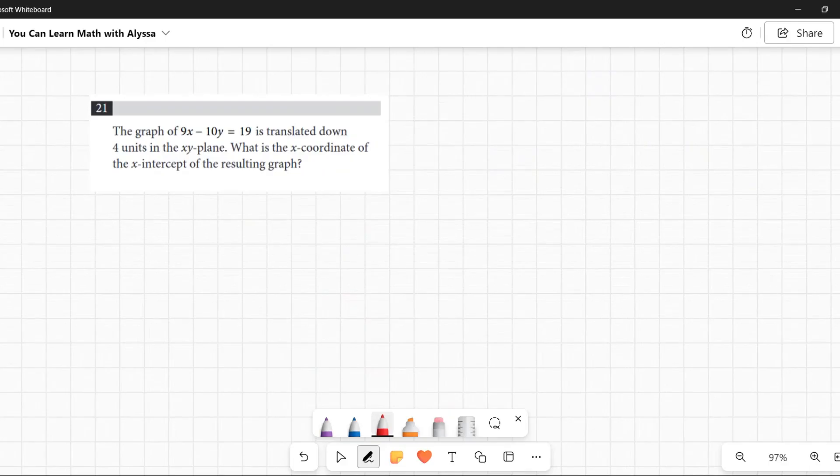Problem 21: The graph of 9x minus 10y equals 19 is translated down four units in the xy plane. What is the x-coordinate of the x-intercept of the resulting graph?